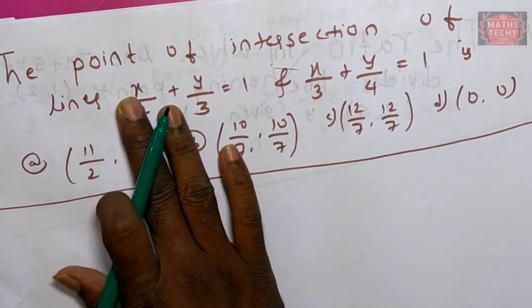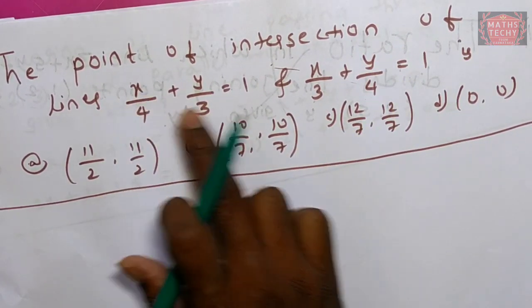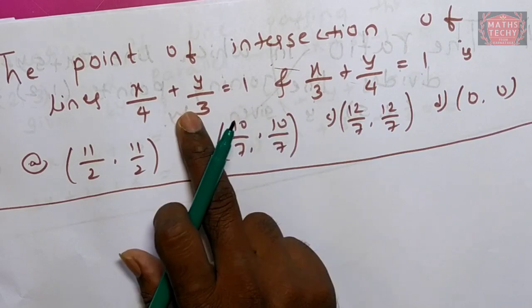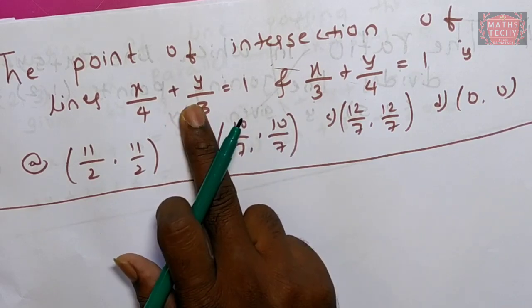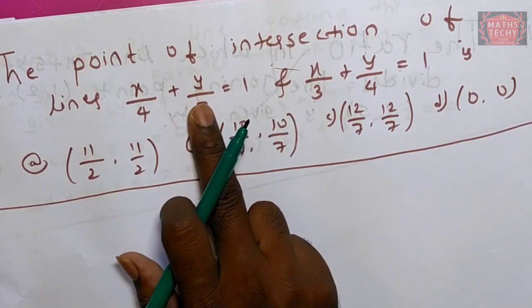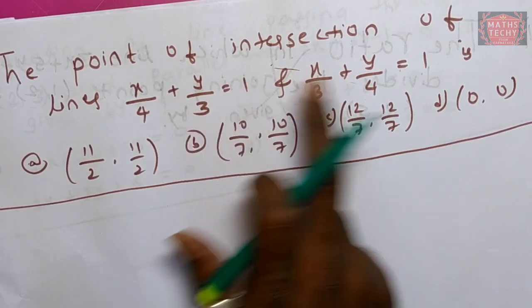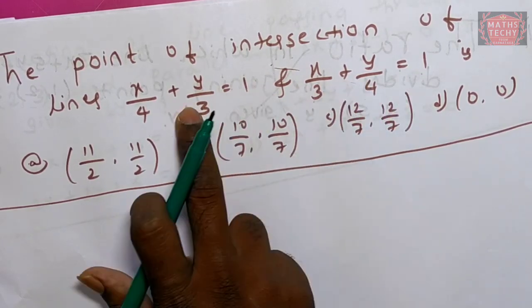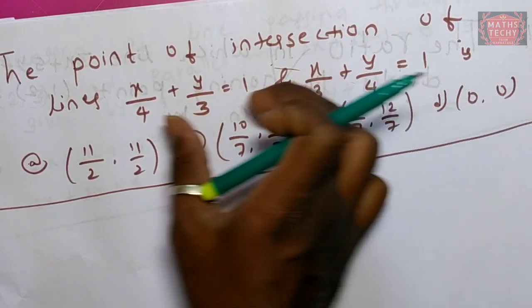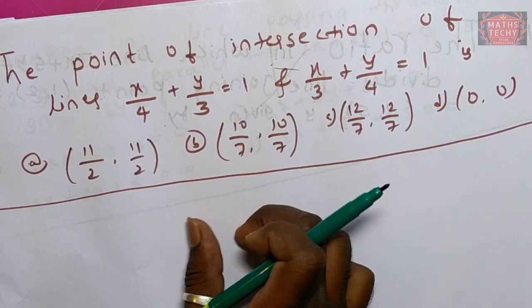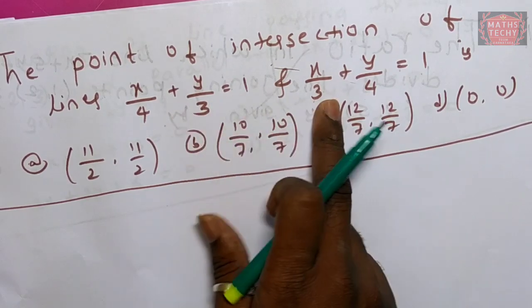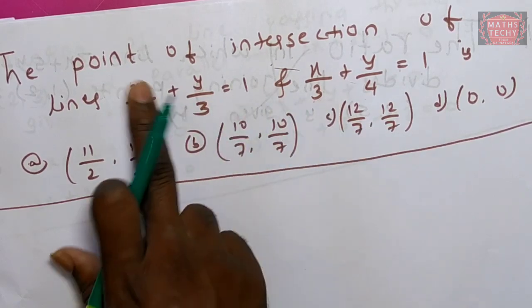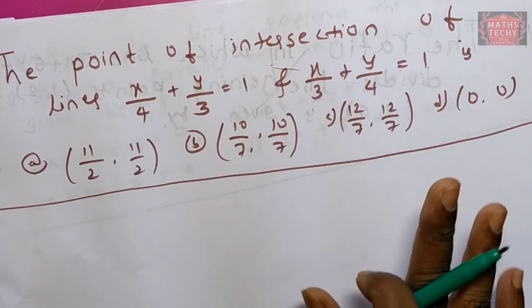Here we go. We have two lines. This is the intercept of line one, and this will be the intercept of line two. The point of intersection is defined.